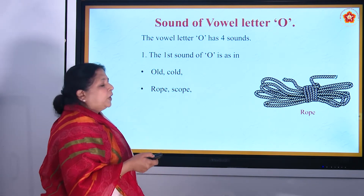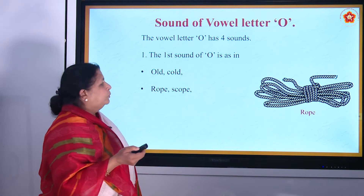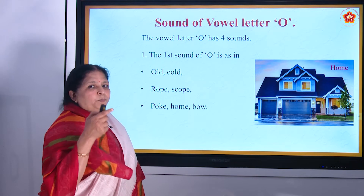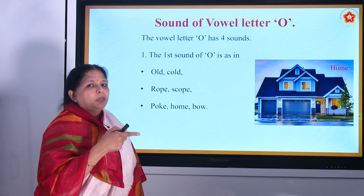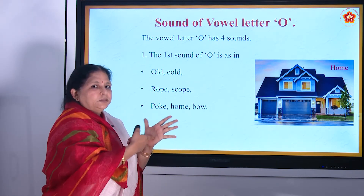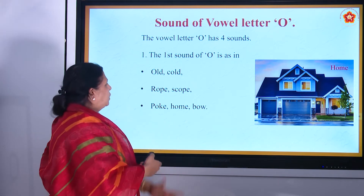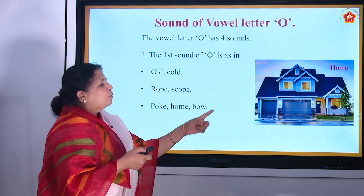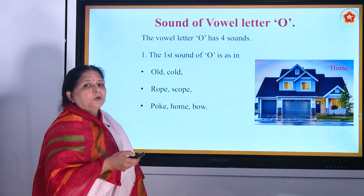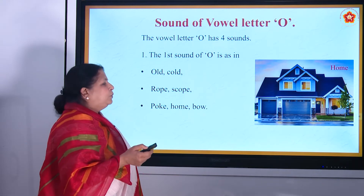Then 'scope' — S, C, O, P, E — scope. Then 'poke' — P, O, K, E — poke means if you have something you are poking like this, it is called poke. Then 'home' — H, O, M, E — home. Then 'bow' — B, O, W — bow.